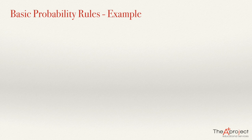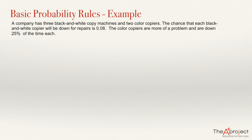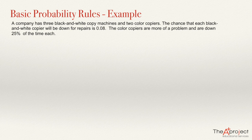The question is this. A company has three black and white copy machines and two color copiers. The chance that each black and white copier will be down for repairs is 0.08. The color copiers are more of a problem and are down 25% of the time each.